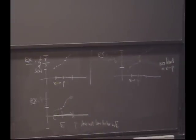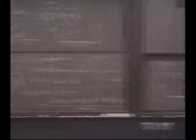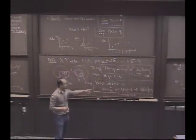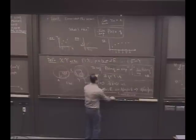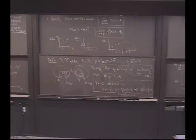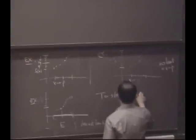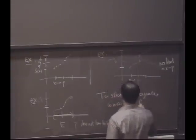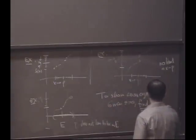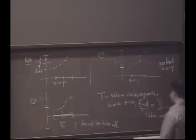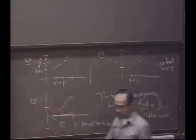So if you want to show convergence of a sequence, for every epsilon, you have to find an n, an index. If you want to talk about convergence of a function, for every epsilon, you have to find a delta. Right. So your job to show convergence is to find a delta. To show convergence, give an epsilon bigger than zero. Find a delta that works. That satisfies the rest of this definition. Okay.